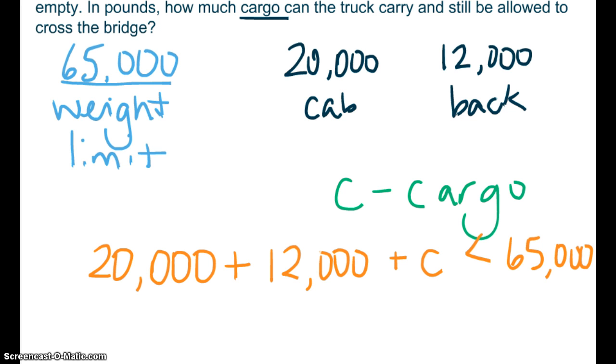Now it's also important to note that it could weigh equal to 65,000 pounds. So the way that I set this up, and you probably did something similar, maybe not exact, we have the cab plus the trailer plus the amount of cargo is less than or equal to 65,000.